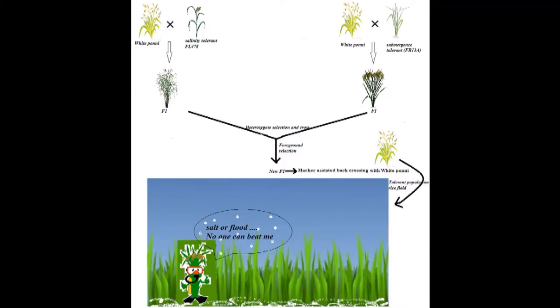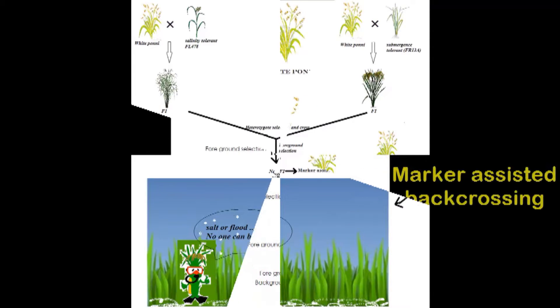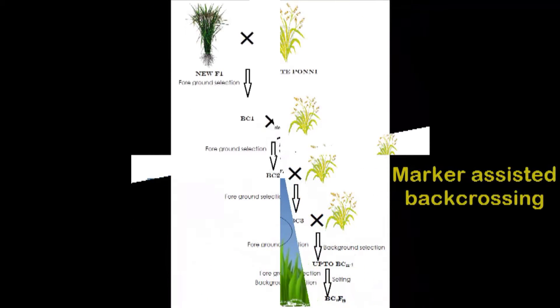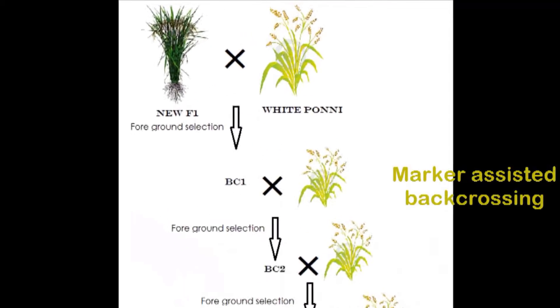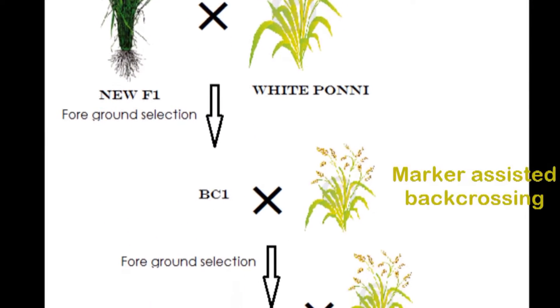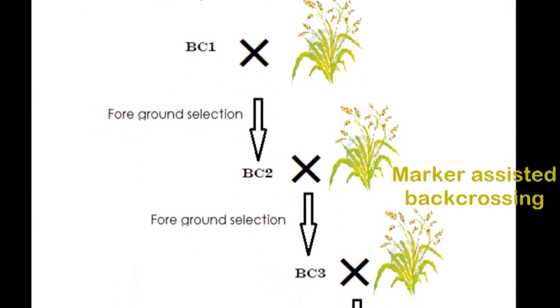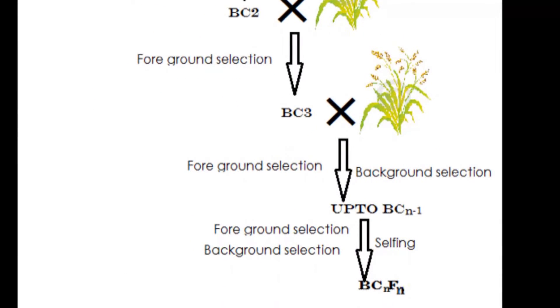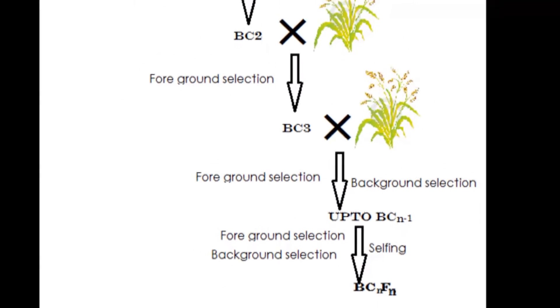Marker assisted backcrossing is the use of molecular markers to indirectly select the trait of interest. It is time saving and produces more accurate results than the conventional selection methods.